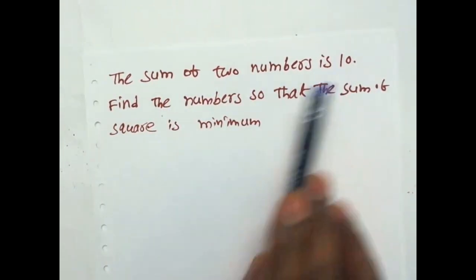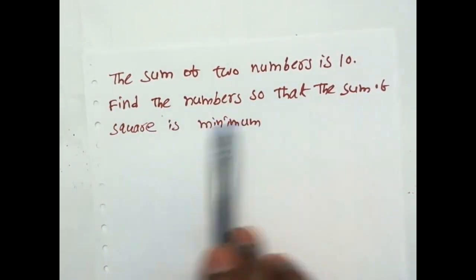The sum of two numbers is 10. Find the numbers so that the sum of square is minimum.